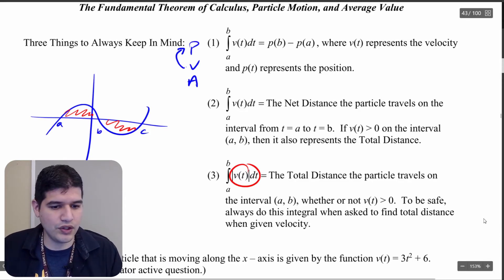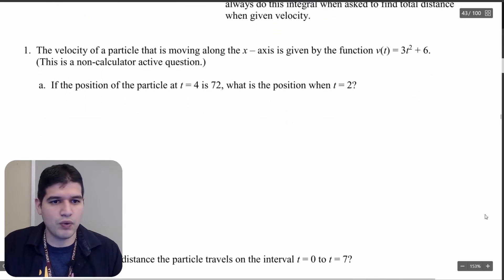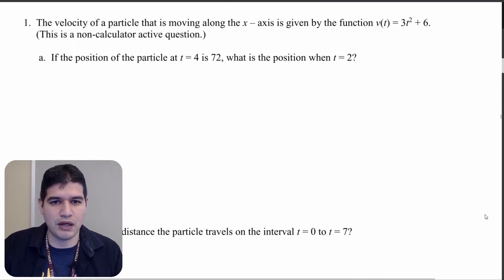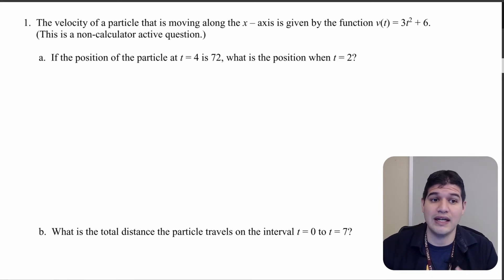So let's go ahead and look at this example problem. This is going to be a series of three videos where we're going to go over three example problems and then you're going to have some homework problems. We're given the velocity of a particle moving along the x-axis, and we know that the position of the particle at t equals 4 is 72.